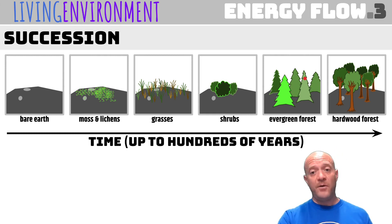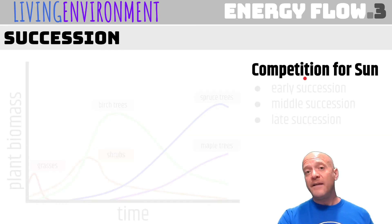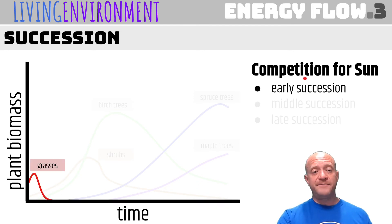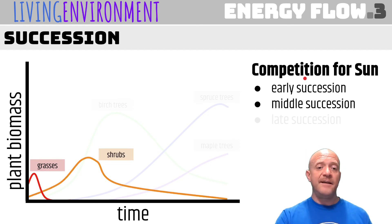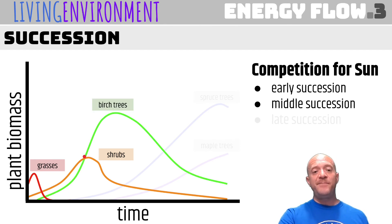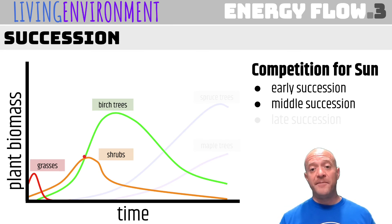You don't have to know all of that — just understand that it takes up to hundreds of years and we are essentially competing for sunlight. So if we look at this graph, in early succession you might have grasses, and in middle succession you start to have shrubs. Once you get more biomass, it's going to start shading things out, but they're still taking advantage of the availability of sun.